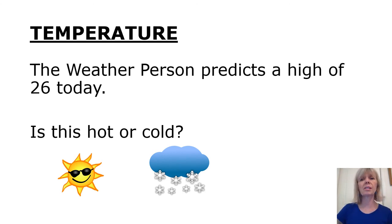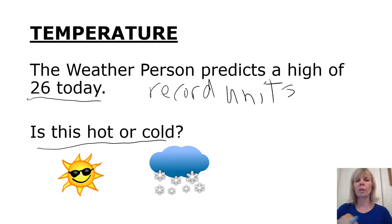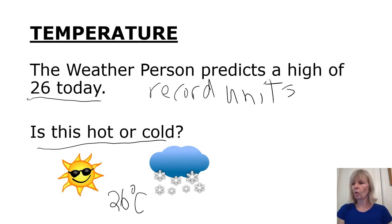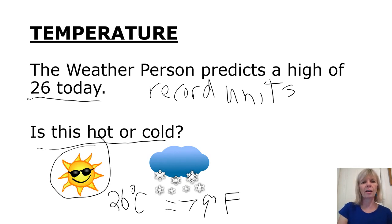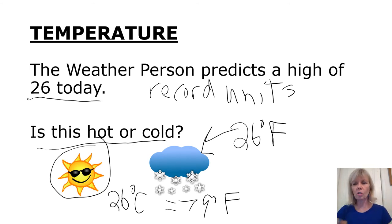The weather person predicts the high is going to be 26 today — is this hot or cold? What we're missing are the units. It's always really important to always record your units with any measured number. If we have 26 degrees Celsius, that's equivalent to 79 degrees Fahrenheit — a warm, sunny day. But if we have 26 degrees Fahrenheit, that's cold, because if it's 32 degrees or lower and it rains, we're going to get snow. So always include those units.